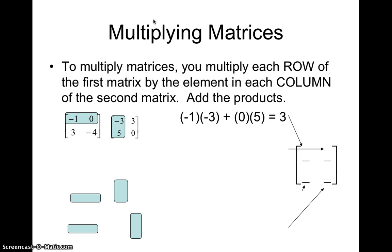So negative one times three is three. Zero times five is zero. That makes three. The answer is going to go in the first row, first column of my product right here. Why? Because it came from the first row of matrix one and the first column of matrix two.